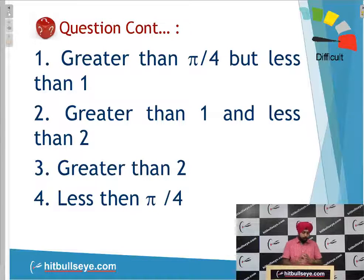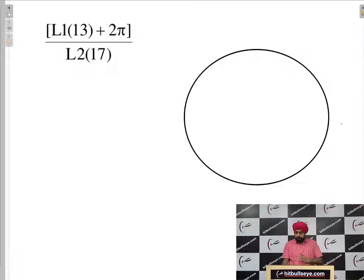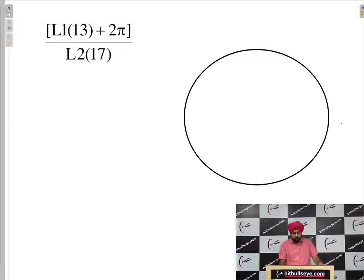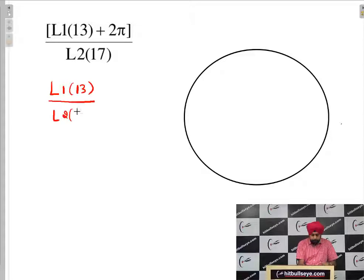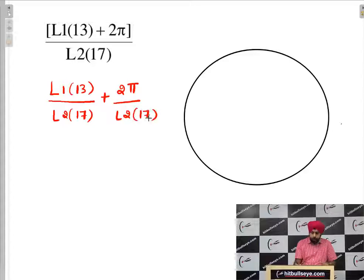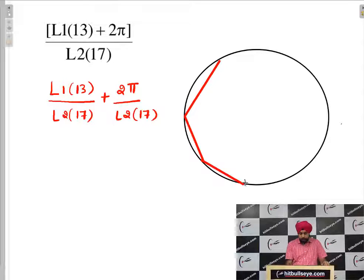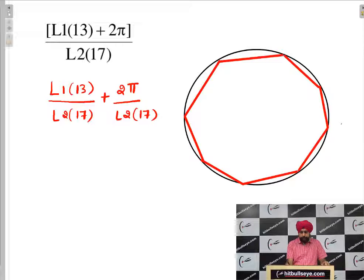Now let's solve this question. First of all, let's be clear what we want to calculate. We want to calculate L1_13 divided by L2_17, plus 2π divided by L2_17. Now, L2 represents the polygons which have been drawn inside the circle. So within this circle, if I try to draw a polygon having n sides, what can you be sure about this polygon?